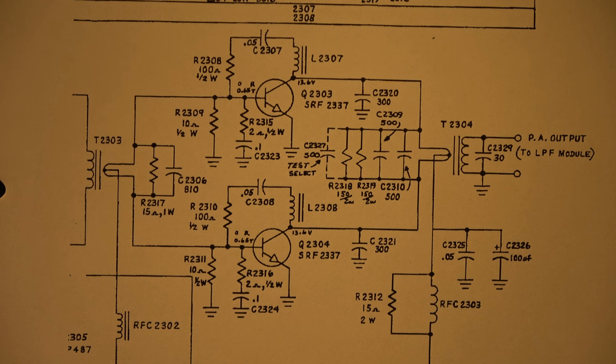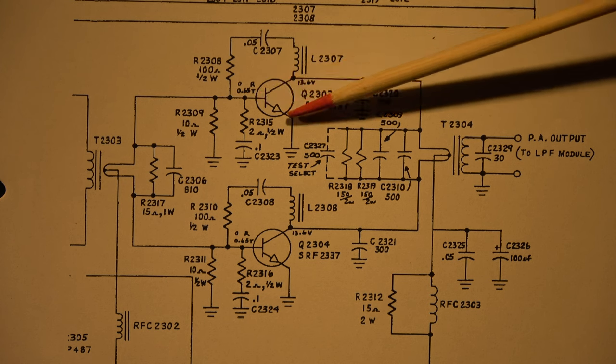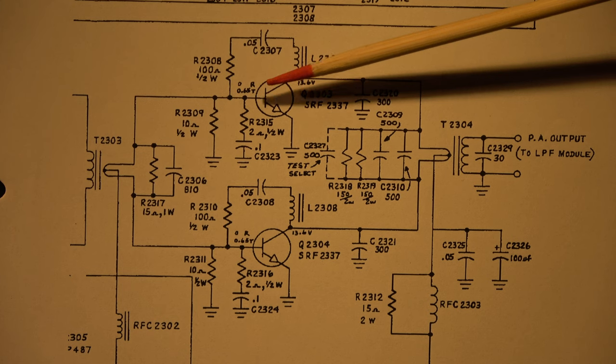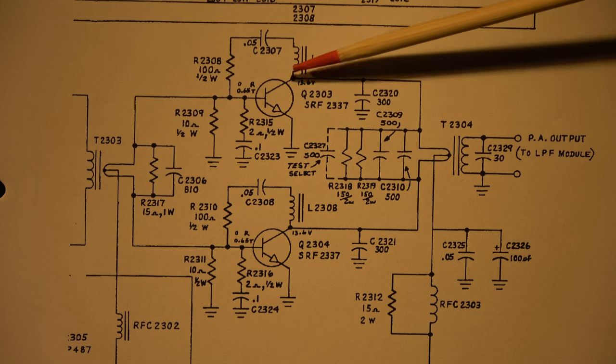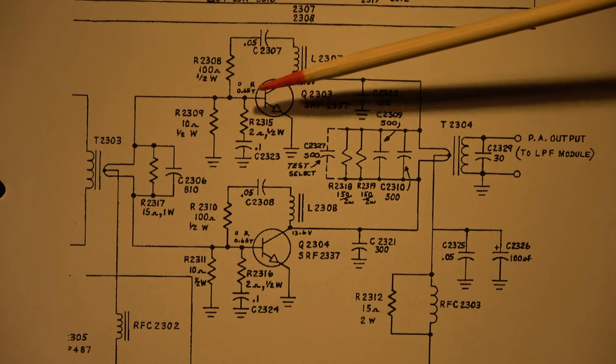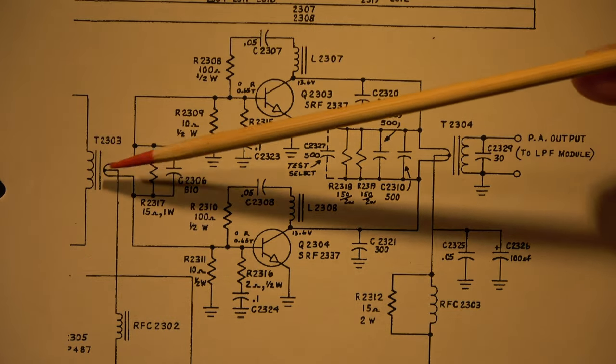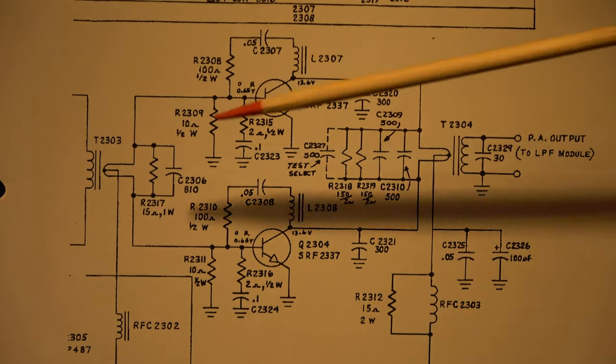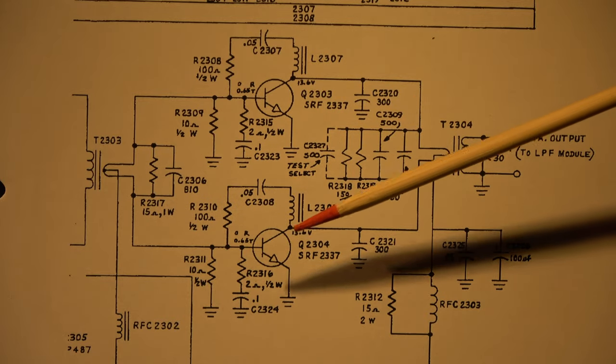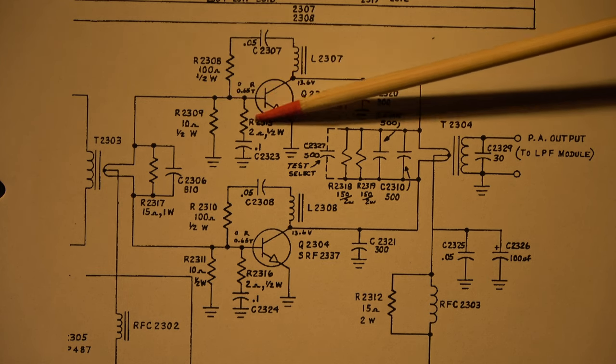We have with this transistor the base emitter junction failed, so we have here an open input. Only the base collector junction is still working, but the collector has a potential of 13.6 volt, so this diode is always blocked. And what happens here? Here we have the input transformer. Here are the two driver transistors, and the power of the driver is fed to these two transistors in the push-pull configuration. We know it, this is the center tap. And the problem is, if this junction fails, then we have here no possibility to drive power into this transistor.